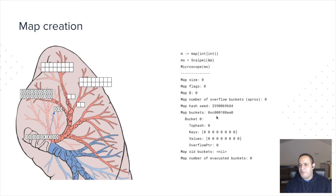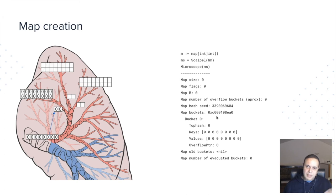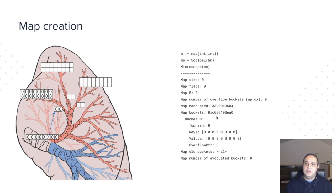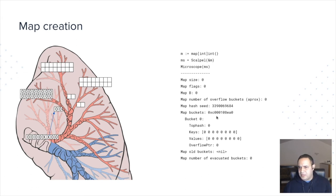Let's see what happens if I create an empty map. Everything is going to be more or less zero. The size is zero, flags are zero, B is zero — which means you have only one bucket. The number of overflow buckets is zero. The hash seed is going to be a random number that will never change in the map itself, because if that number changed, it would no longer be possible to access the keys. Then I have the pointer to the buckets — that's an empty bucket with top hash zero, all keys zero, all values zero, all overflow pointers zero. The old buckets pointer is nil for now, and the number of evacuated buckets is zero.